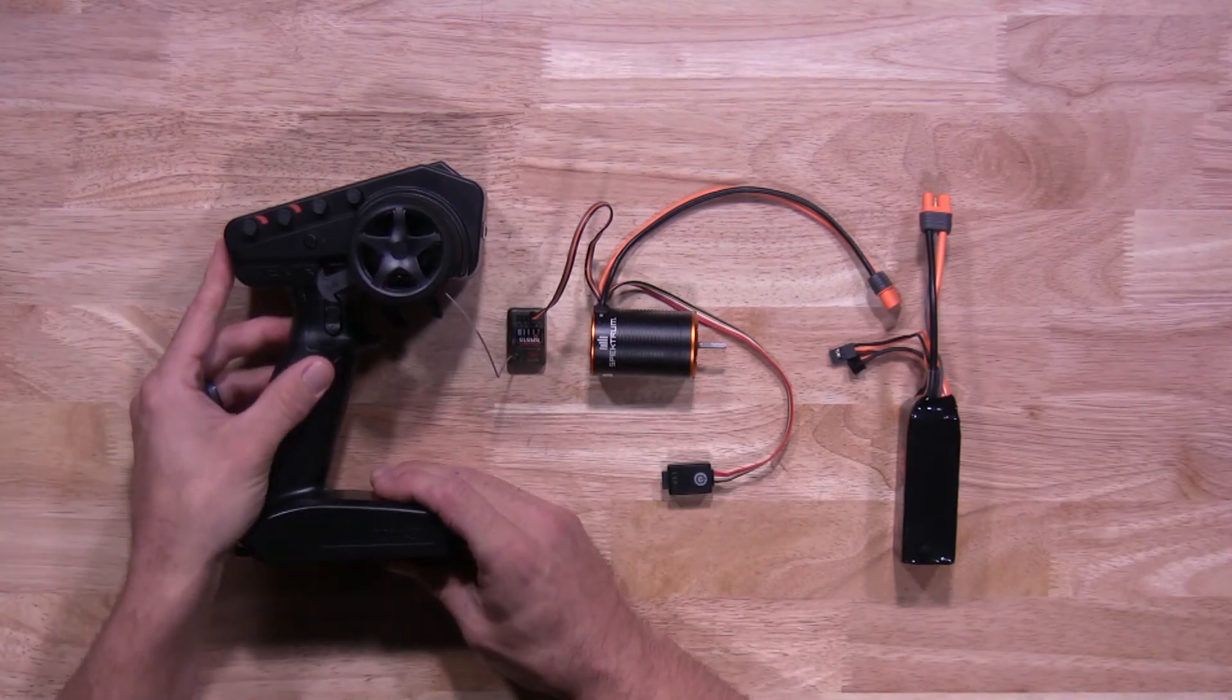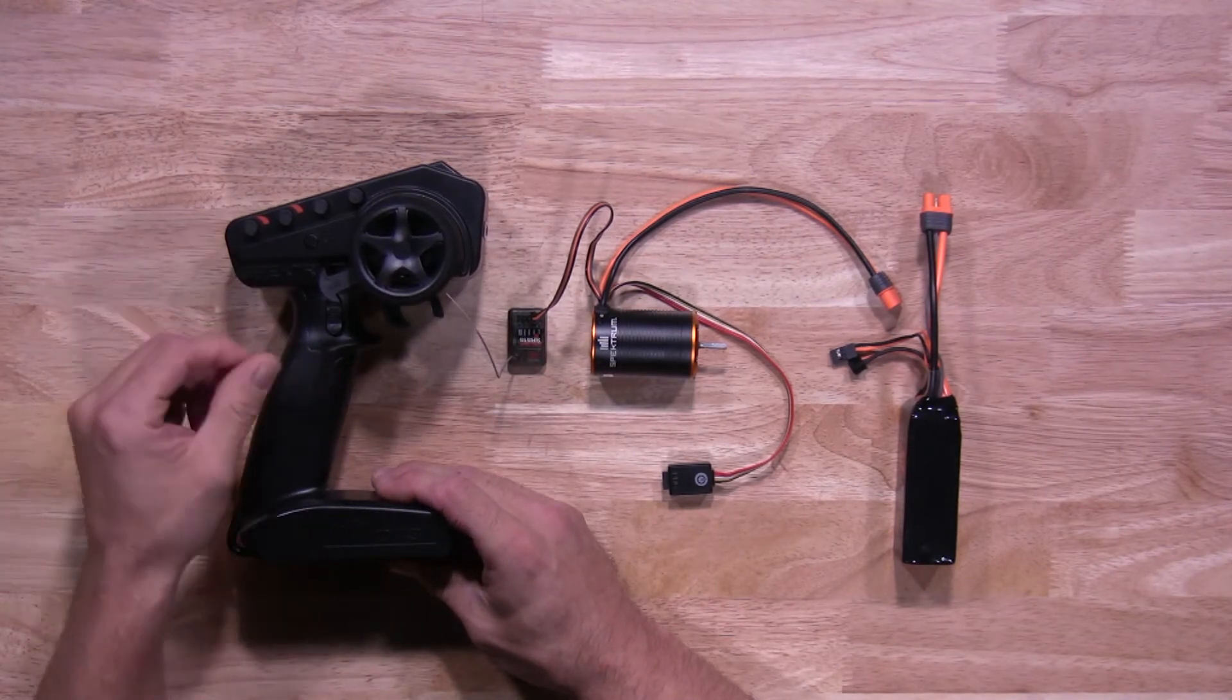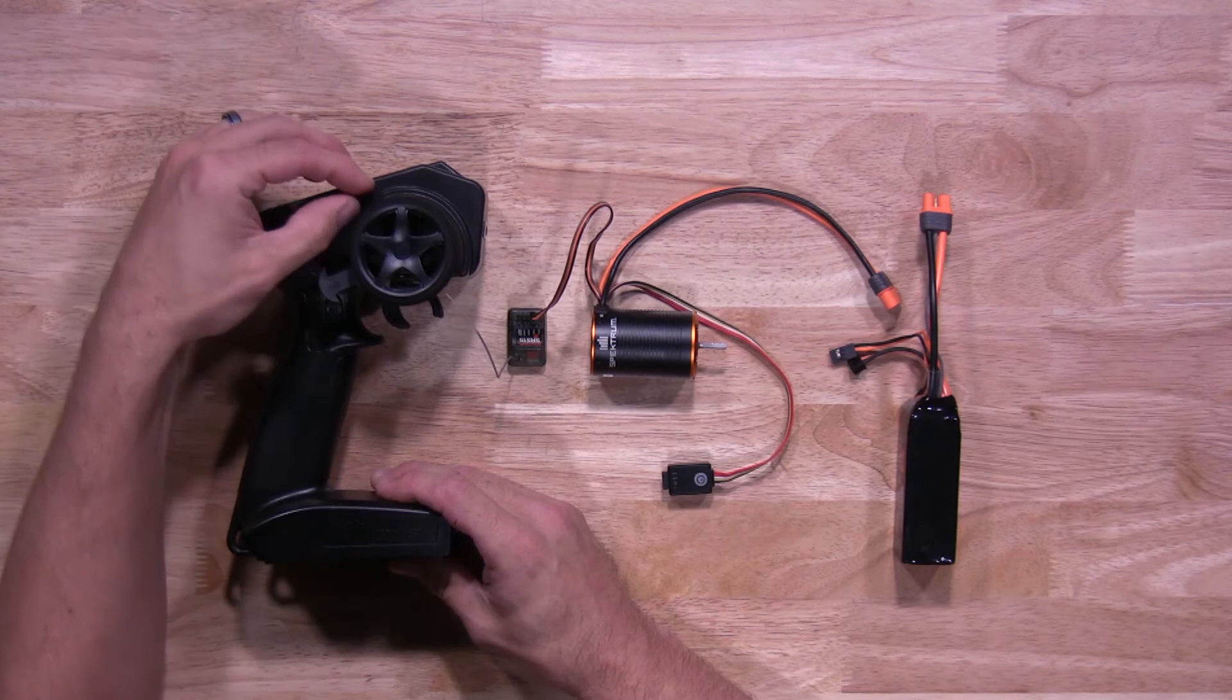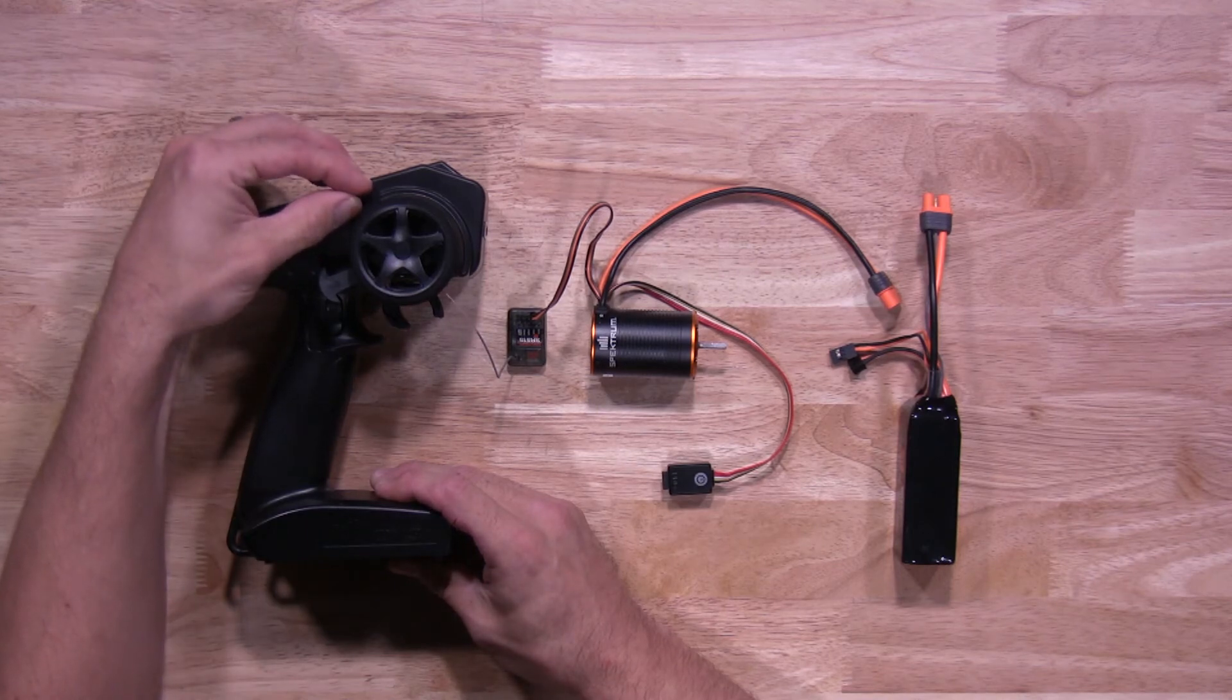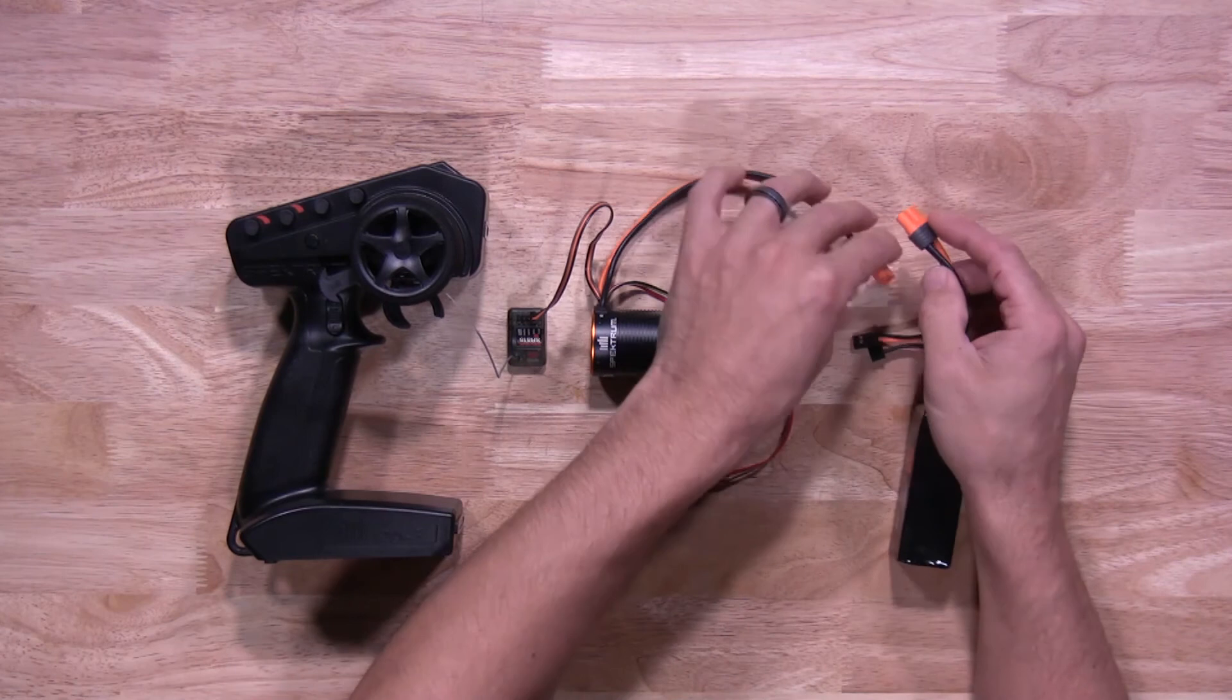We'll start by turning the transmitter on. Also, make sure the trim is in the neutral position for your throttle. Once you have that set in neutral, we'll go ahead and plug your 2-in-1 in.